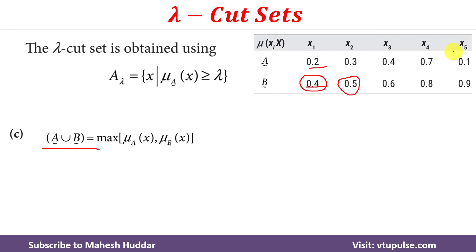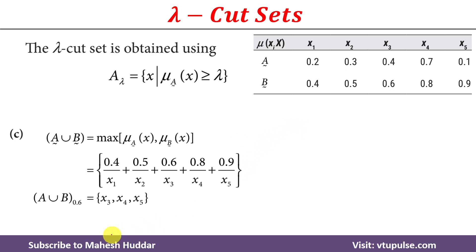Once we calculate the membership values in the union, next we calculate the lambda cut set of the union. The lambda given is 0.6. A member is present in the lambda cut set if its membership value is greater than or equal to lambda. x1 and x2 have membership values 0.4 and 0.5 — they are not greater than or equal to 0.6, so they are not present. But x3, x4, and x5 have membership values 0.6, 0.8, and 0.9 respectively — they are greater than or equal to 0.6, hence they are present in the lambda cut set.